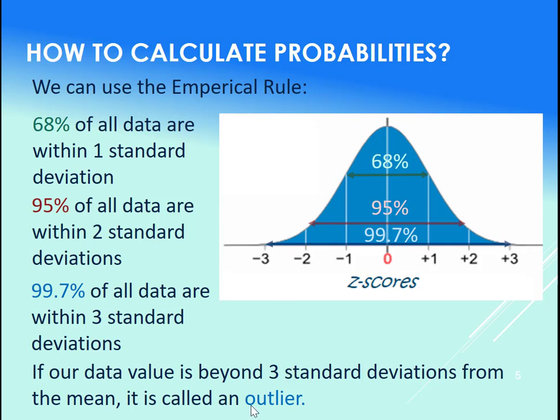If our data value is beyond three standard deviations, we call it an outlier. So if we had data below minus three here in this region, we would call it an outlier, or if we had data above here, we'd call that an outlier. An outlier is obviously not very common—there's almost no area under the curve on either side there.